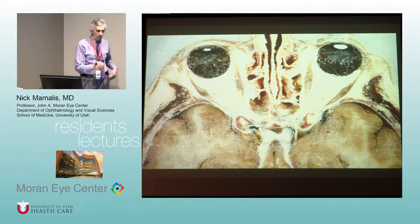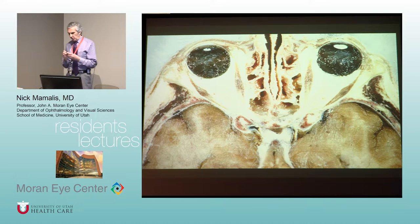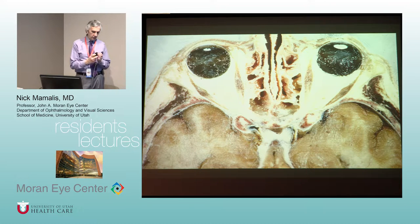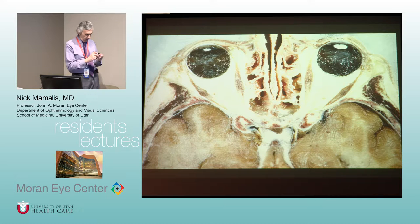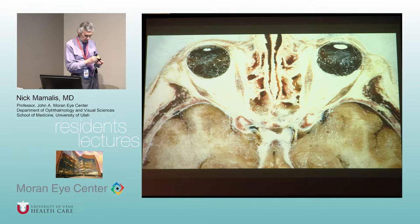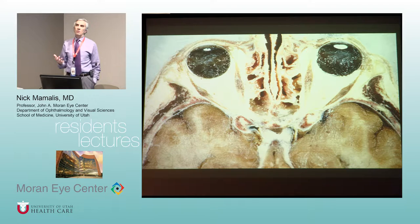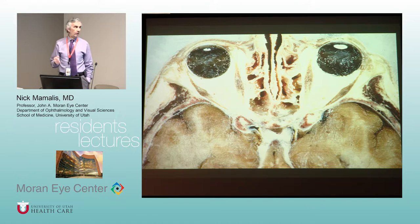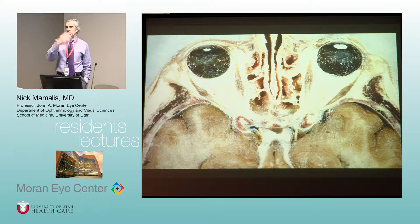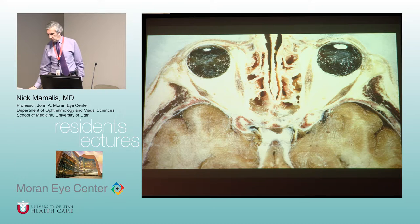All right, so we're going to talk about orbit. The first thing when talking about orbit is you always want to make sure you know the definition of the orbit. When you're looking at the orbital anatomy, you want to understand what the bones are. The first question we always ask is: what are the orbital bones? Julia, tell me what the orbital bones are.